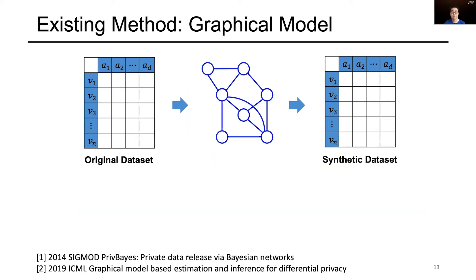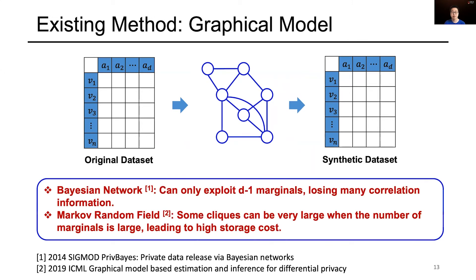There are two widely used graphical models. One is Bayesian network, the other is Markov random field. However, for the Bayesian network, it can only exploit d-1 marginals, which loses many correlation information. For the Markov random field, some cliques can be very large when the number of marginals is large, which leads to high storage cost.